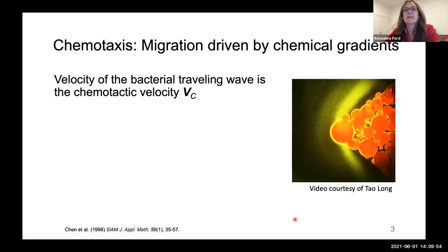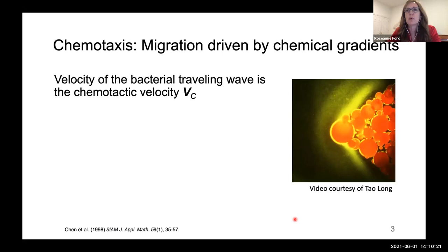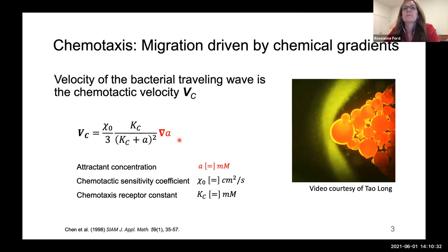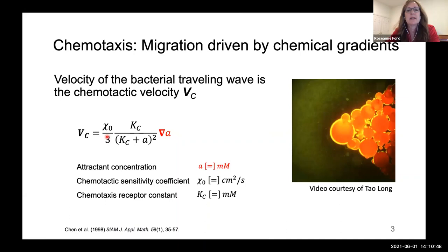In this video, Pseudomonas putida bacteria shown in yellow swim toward orange polystyrene beads that are releasing toluene into the surrounding bacterial suspension. The chemotactic velocity at which the band moves in an otherwise quiescent fluid is proportional to the concentration gradient of the chemoattractant — the Laplacian of A — where in this case the chemoattractant is the hydrocarbon toluene. The chemotactic sensitivity coefficient chi0 is the strength of the response for a particular bacteria-attractant pair.